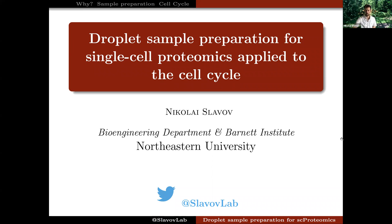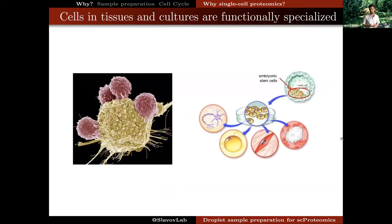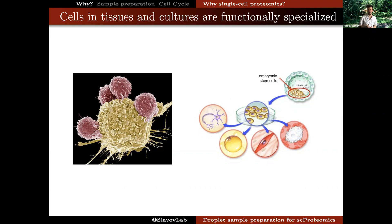I would like to start with a brief motivation for performing single-cell protein analysis. One of the fundamental reasons is the fact that our bodies are made of functionally diverse cells that also have different molecular composition, as illustrated here with a tumor cell covered by four T-cell lymphocytes. Similarly, as we differentiate stem cells in the laboratory, we generate highly heterogeneous mixtures of cells that ideally we should be able to analyze at the single-cell level.